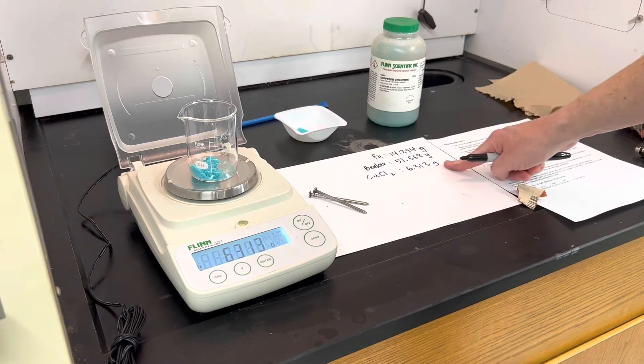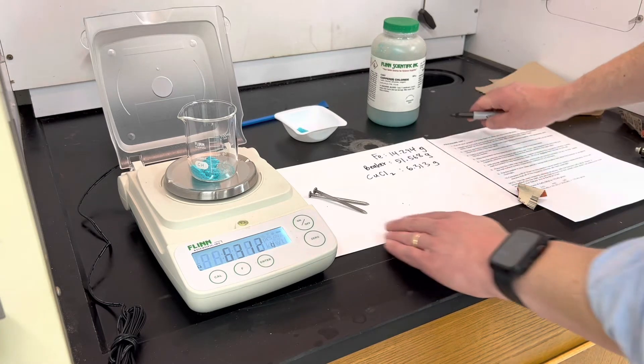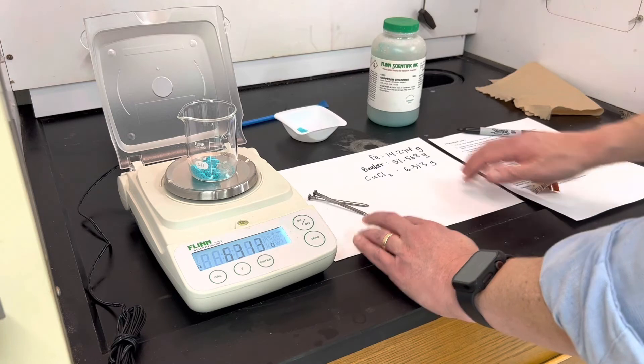The copper chloride is going to dictate how much of this reaction goes. We're going to form copper through this reaction. That really is probably your most important measurement because everything else will hinge on that.